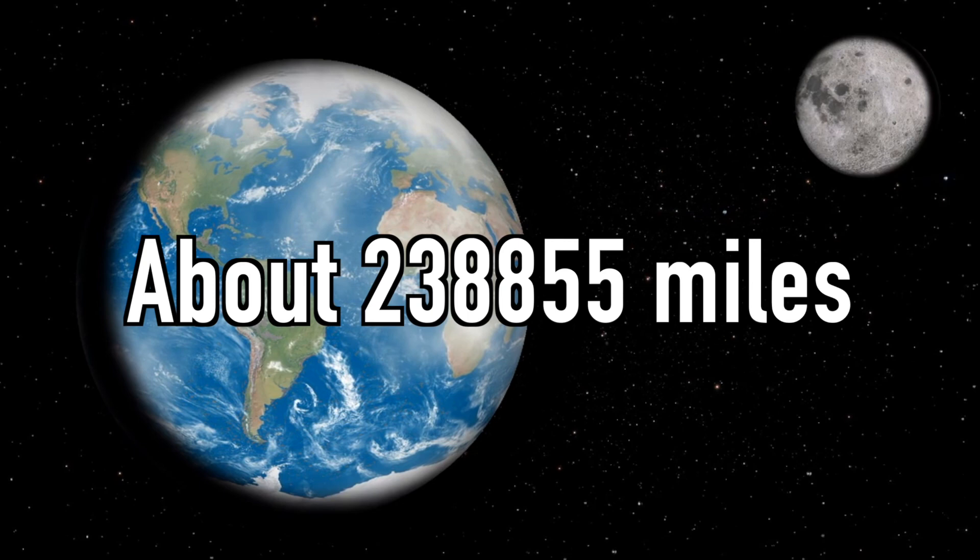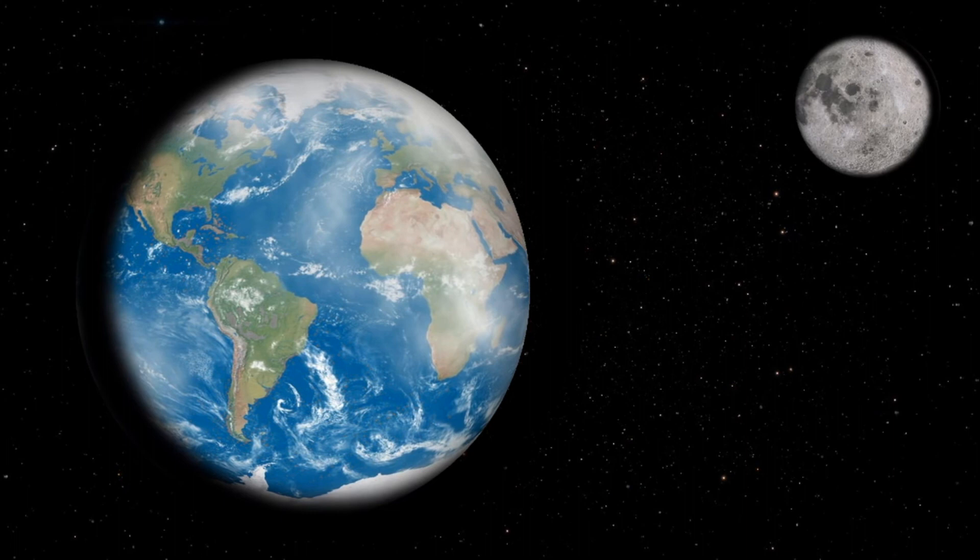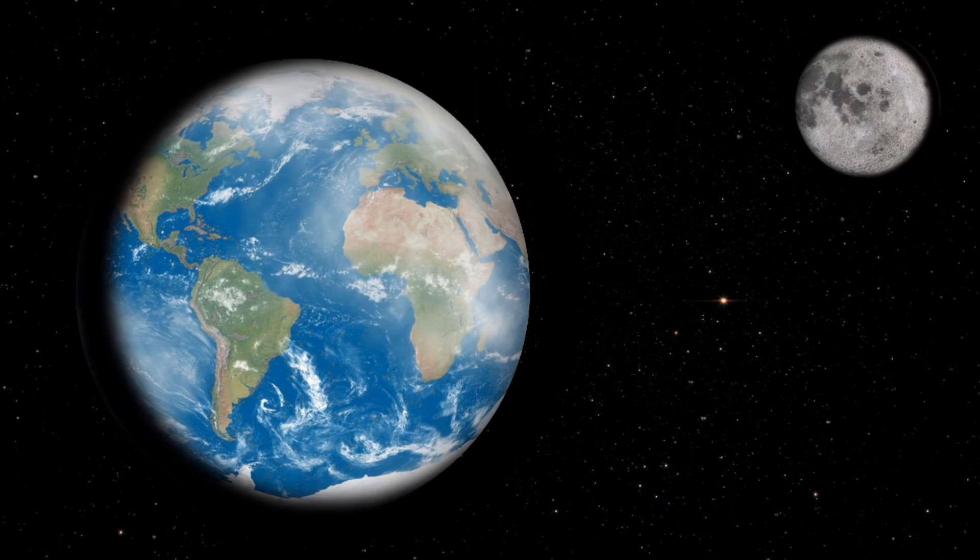The moon is about 384,400 kilometers away from the earth. If you drive a car at 100 kilometers per hour without stopping, you can reach the moon in about half a year. If you go to the moon at the speed of light, it seems you can get there in 1.3 seconds. I would like to ride on light at least once.